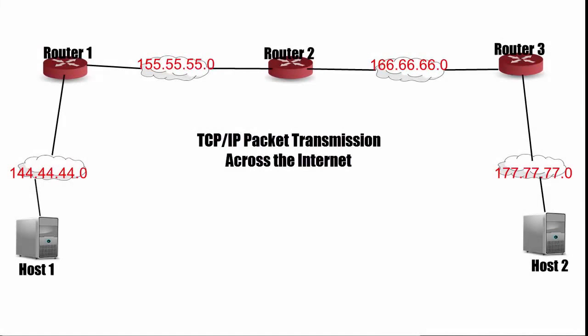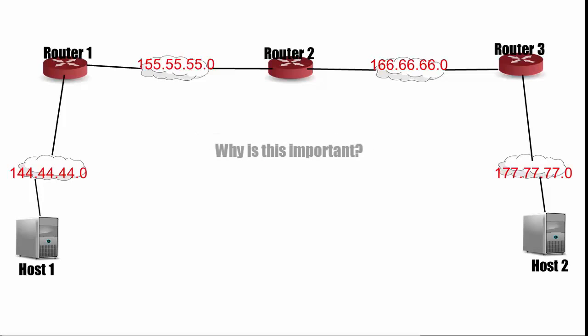Huckleberry here from PacketHacks.com, and today we're going to take a deep dive into the depths of TCP/IP. In this video, we're going to see what happens to a single packet as it is transmitted across the internet from host 1 to host 2. Host 1 and host 2 could be in the same country, in the same city, or in different cities. The process is still the same. This illustrates the basic process that allows data communication across the internet — without this process, the internet simply wouldn't exist in the way that we know it.